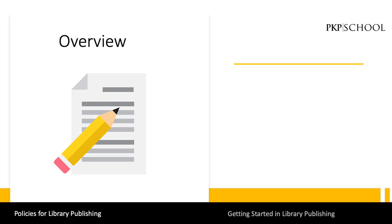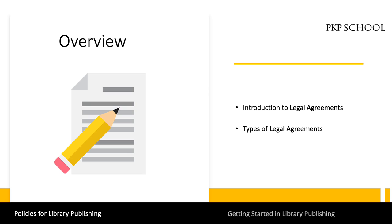Before we begin, here are two things we will be looking at in this video. First will be a short introduction on what legal agreements for your library publishing program are and why you need them. Following will be a breakdown of some of the major types of legal agreements. In Units 3-6 of this module, we will examine each type of agreement in more detail and look at the application in your library publishing program.